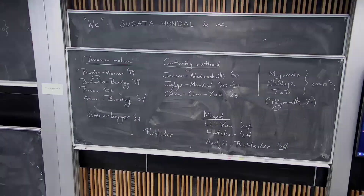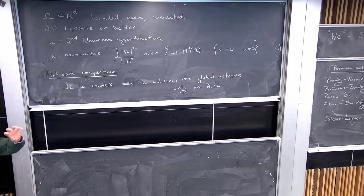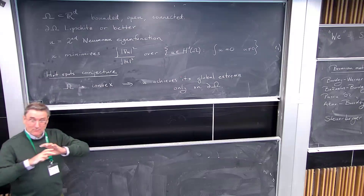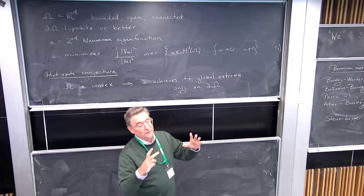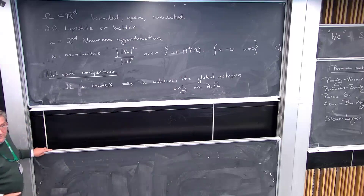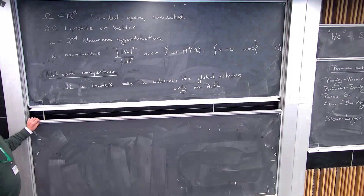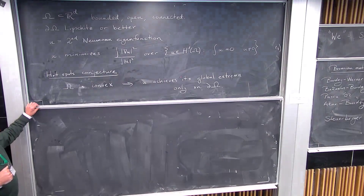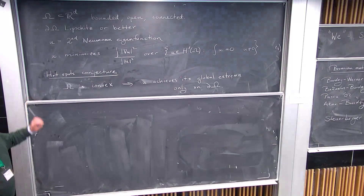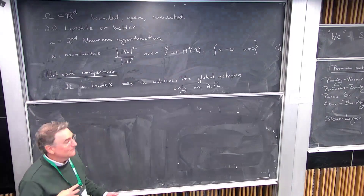These Neumann eigenfunctions have continuous extensions to the closure, so sometimes I think of u as living on the open set but then taking the closure. In that sense, the extremum — either global maximum or global minimum — is achieved on the boundary.